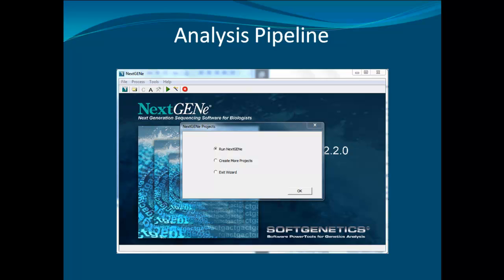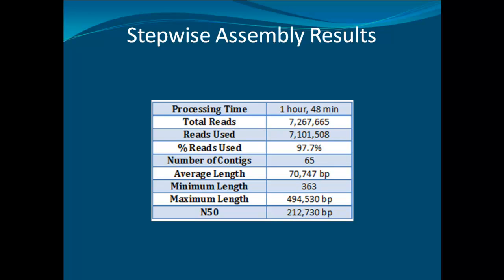In the final window of the project wizard, you can choose to set up additional projects for uninterrupted processing. The project will be processed in the order it was created and all results will be outputted in the designated folder. It took less than 2 hours to assemble 65 contigs from 7,267,665 reads. About 97.7% of the reads were used while the remaining 2.3% were left unassembled. The average length of the contig is 70,747 base pair, while the maximum length reaches 494,530 base pair. The N50 for this assembly is 212,730 base pair.